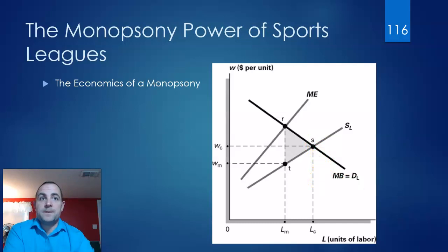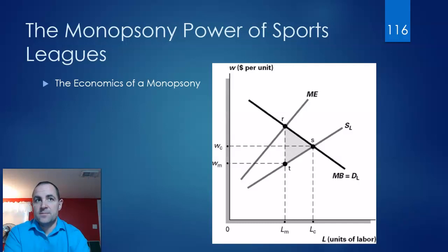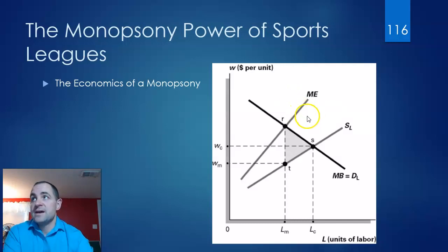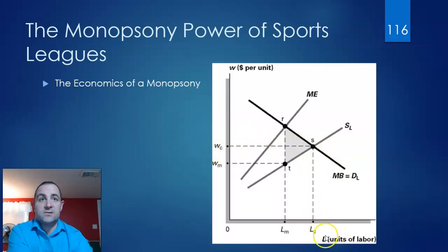In the labor market, the demand curve is the firm's marginal revenue product of labor, which we've talked about in previous videos. In a perfectly competitive market, firms hire at the point where the demand of labor equals the supply of labor, which is point S. So you will have a wage at WC and an amount of labor at LC.